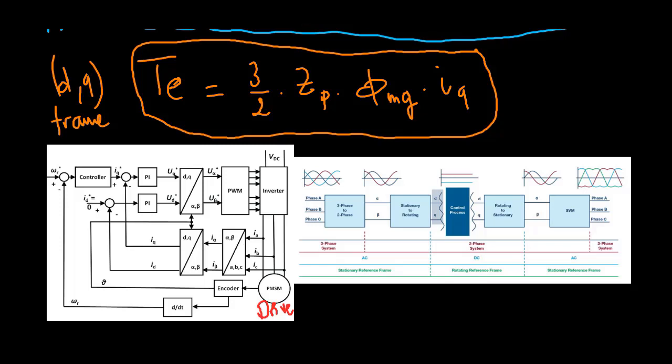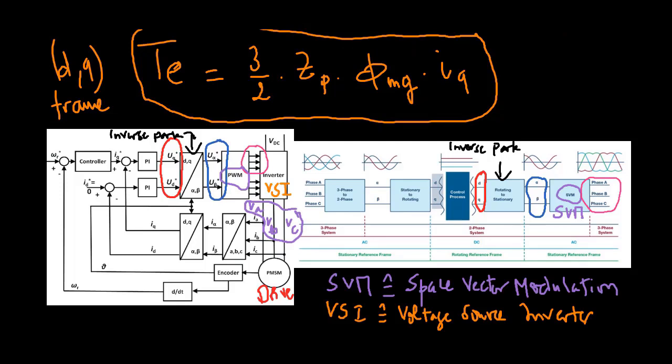However, in the implementation of the control law, the control signals VD and VQ will be converted to V alpha and V beta signals using the inverse Park transform, then to three phase voltage signals VA, VB and VC that will be realized using a voltage source inverter, typically consisting of a DC power supply and several semiconductor switches.